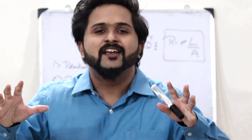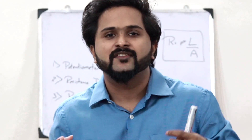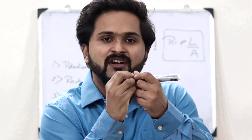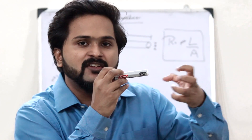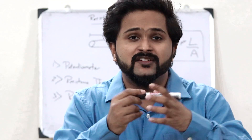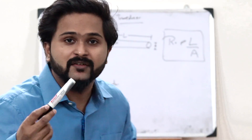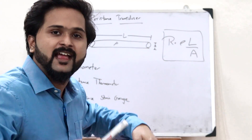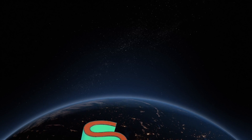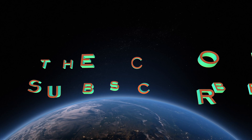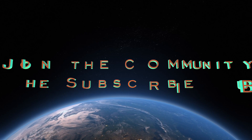So to summarize, a resistance transducer is one where a physical quantity can be measured as a change in resistance of a particular conductor. This change in resistance is obtained because of the variation of either one of these parameters: the resistivity, the length, or the area of cross-section. I hope you guys now have a clear understanding of what a resistance transducer is. If you found this video informative, do hit the like button and join this community by hitting that subscribe button.